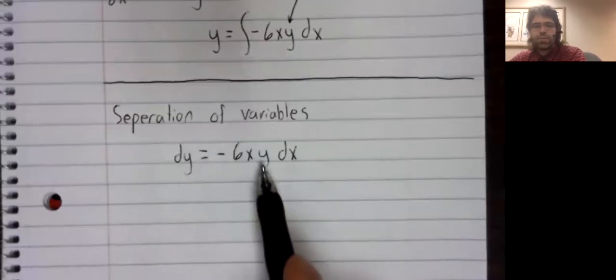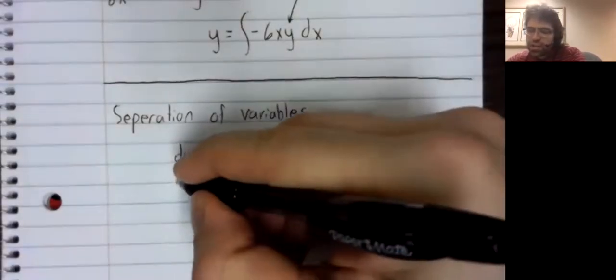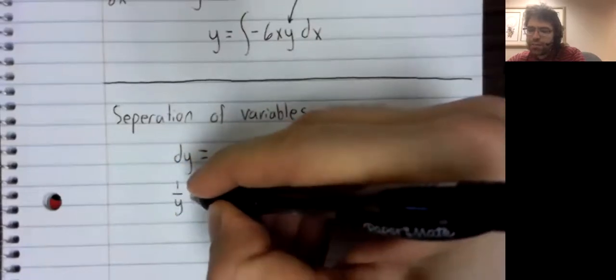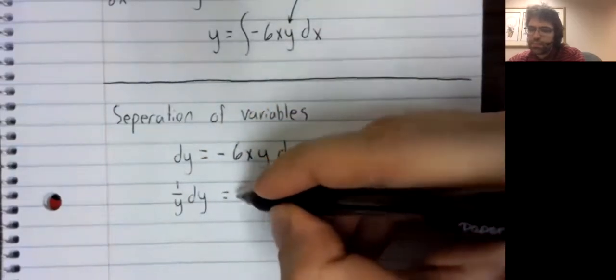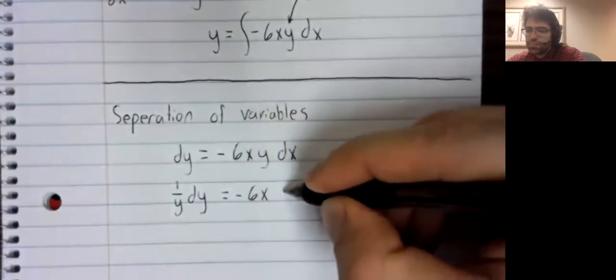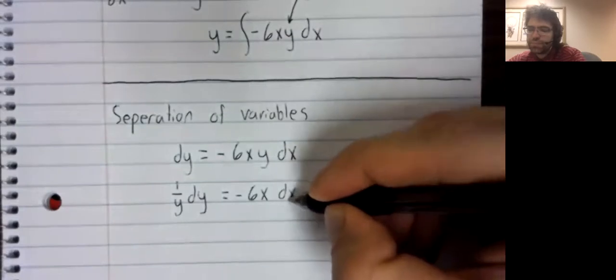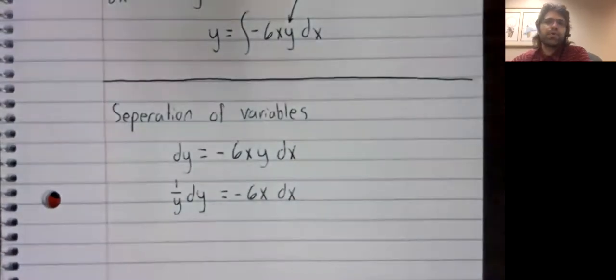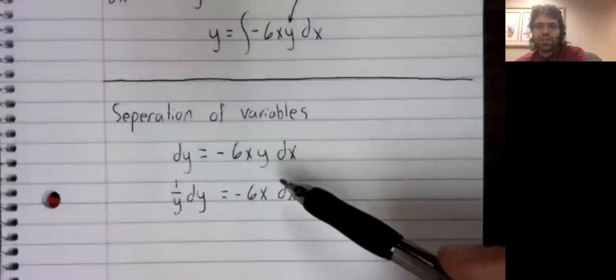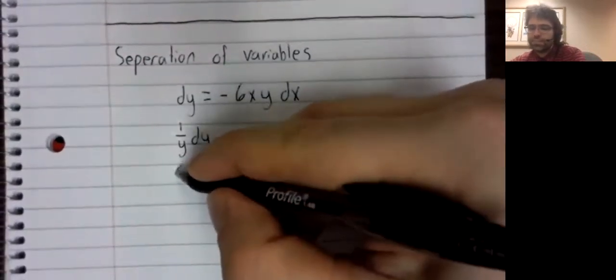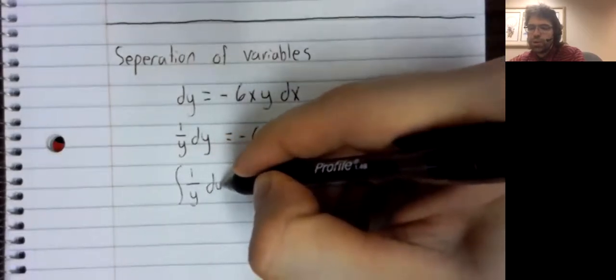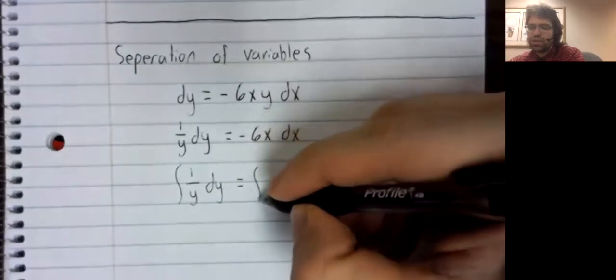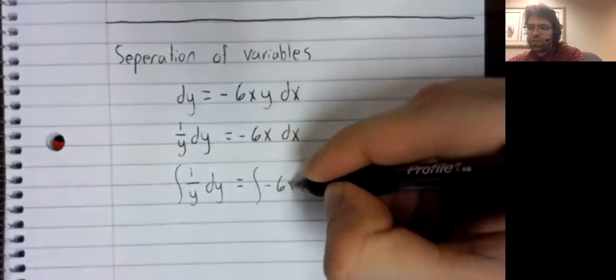So we'll divide both sides of this equality by y. And now we're going to add integral signs to the left and to the right. We're going to integrate both sides of this equality.